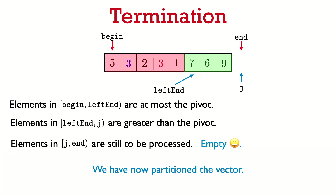We've established that the invariant holds at the beginning of the for loop and shown that the body maintains it, so the invariant holds at the end of the for loop. At the end, j equals end, meaning we've partitioned the entire interval: all elements from begin up to but not including leftend are at most the pivot, and all elements from leftend up to end are greater than the pivot — exactly what we wanted.